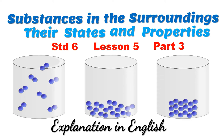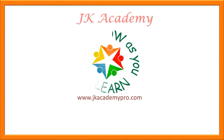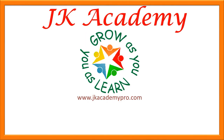Today students will be doing part 3 from lesson 5 from the general science textbook for standard 6: Substances in the surroundings, their states and properties. For a complete lesson, do watch parts 1, 2, 3 and 4. You will get the link in the description box below. This video was made just for you.